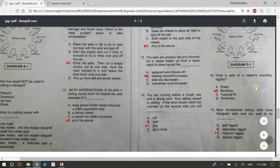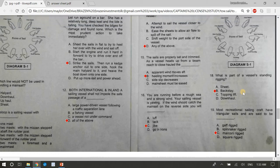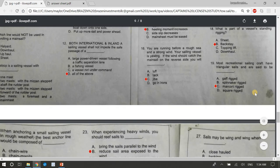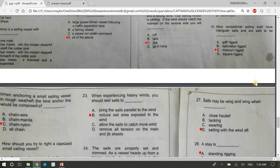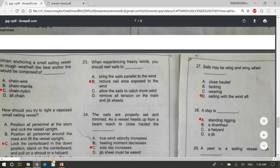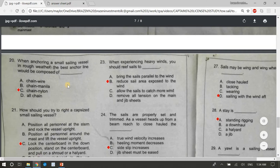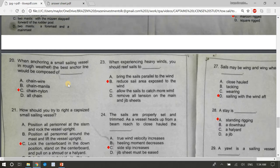Eighteen, what is part of a vessel's standing rigging? Of these, the answer is B, backstay. Nineteen, most recreational sailing craft have triangular sails and are said to be blank. The answer is C, Marconi rigged. Twenty, when anchoring a small sailing vessel in rough weather, the best anchor line would be composed of? C, chain nylon.